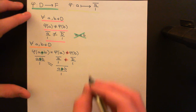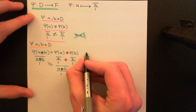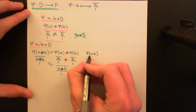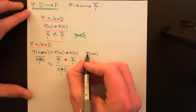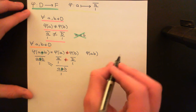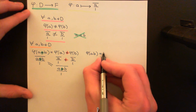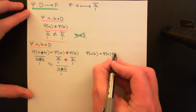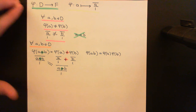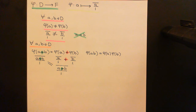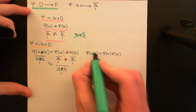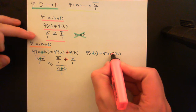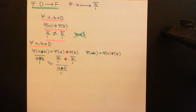Now I want to prove the exact same thing but for multiplication. I want to prove that if you first multiply A and B together in the integral domain and then map them into the fraction field, you get the same answer as if you first map A and B into the fraction field and then multiply them together there. This is multiplication in the integral domain on one side, and multiplication in the fraction field on the other.